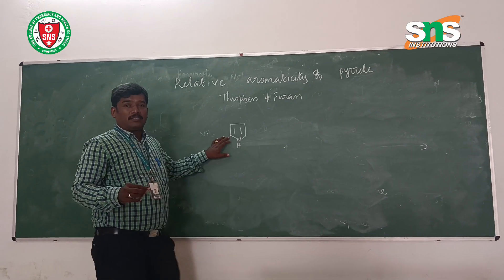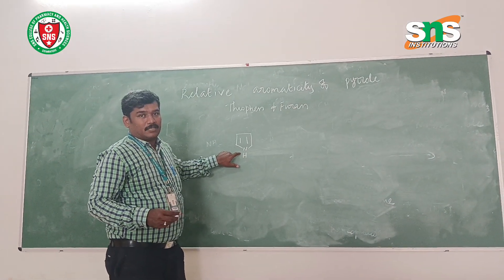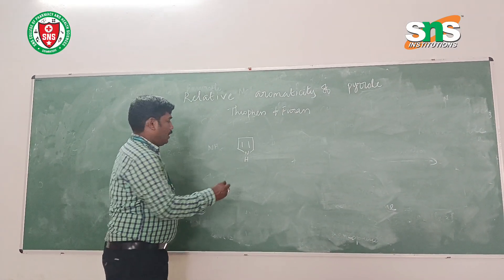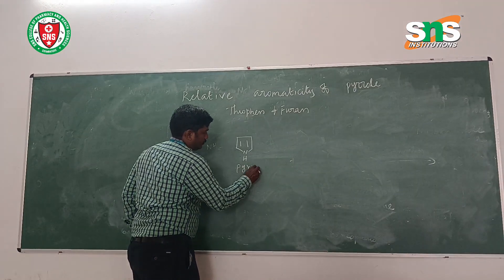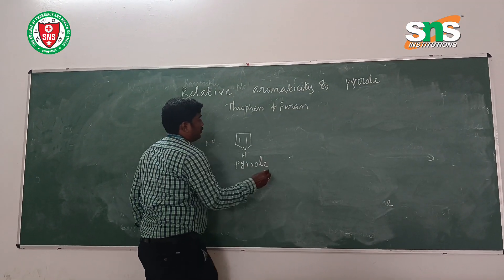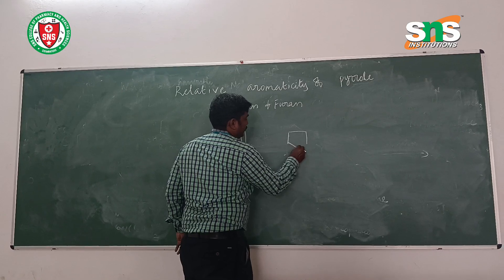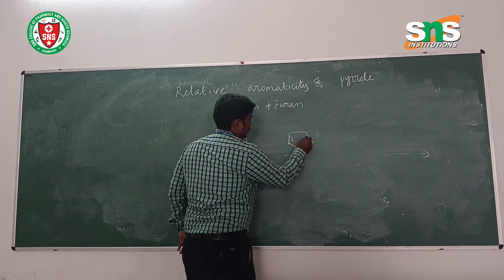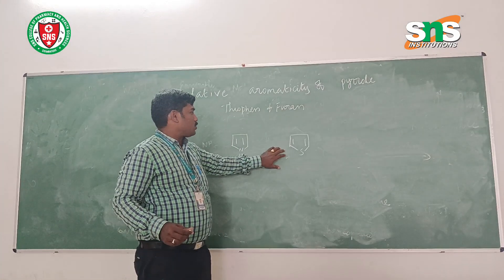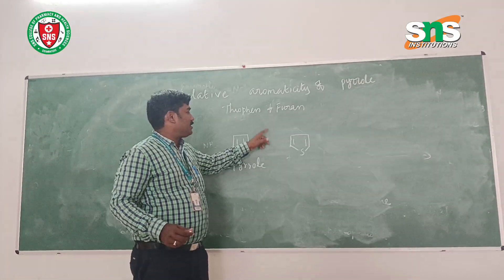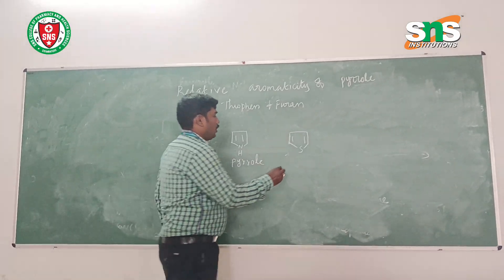Pyrrole is a five-membered ring in which nitrogen is present as a heteroatom. Second one, thiophene. Thiophene is also a five-membered ring in which sulfur is present as a heteroatom.